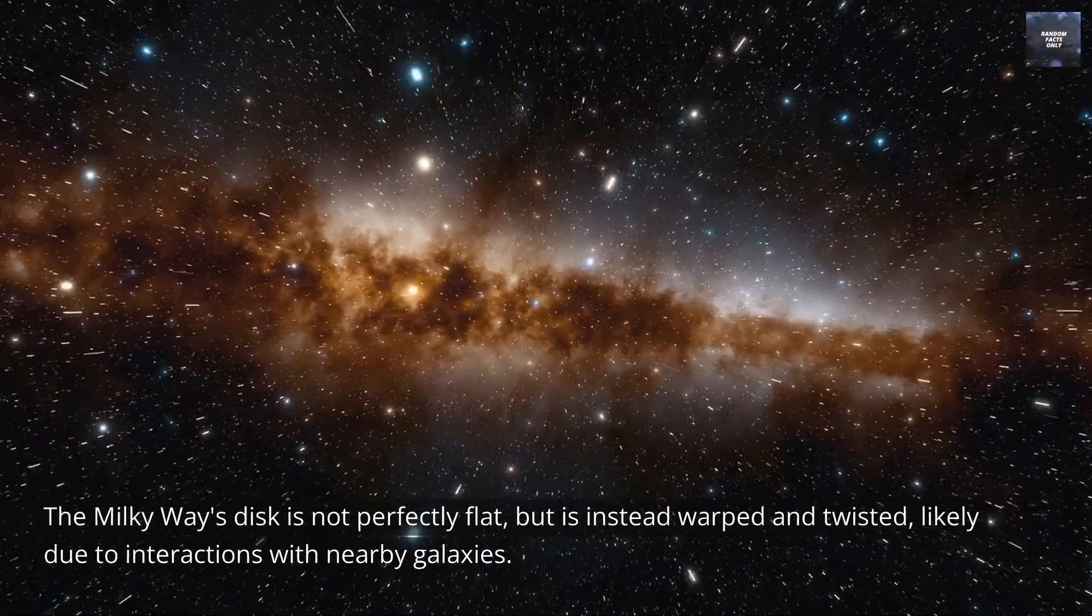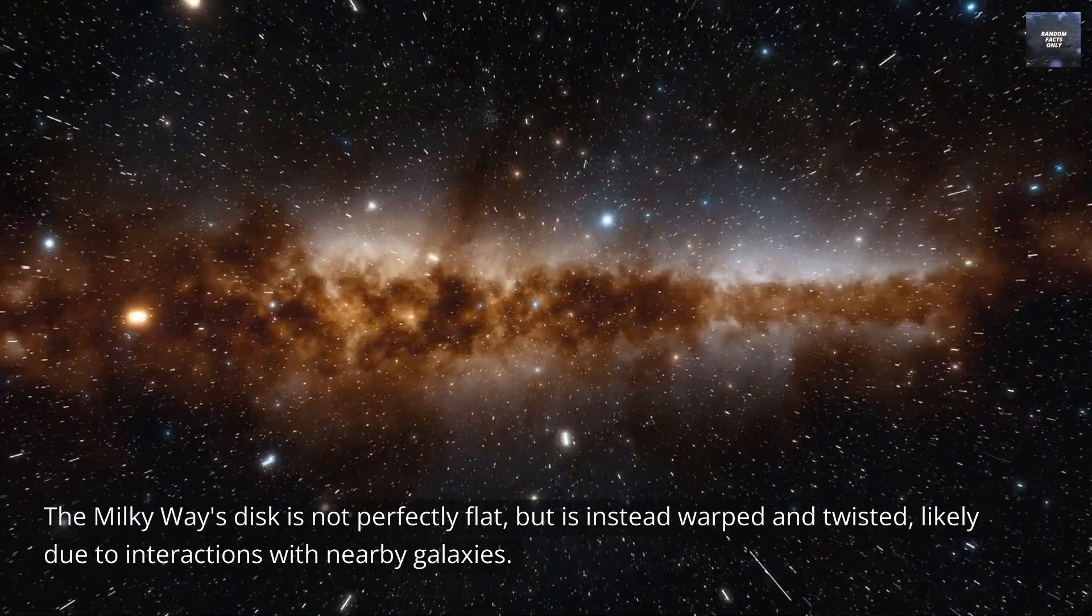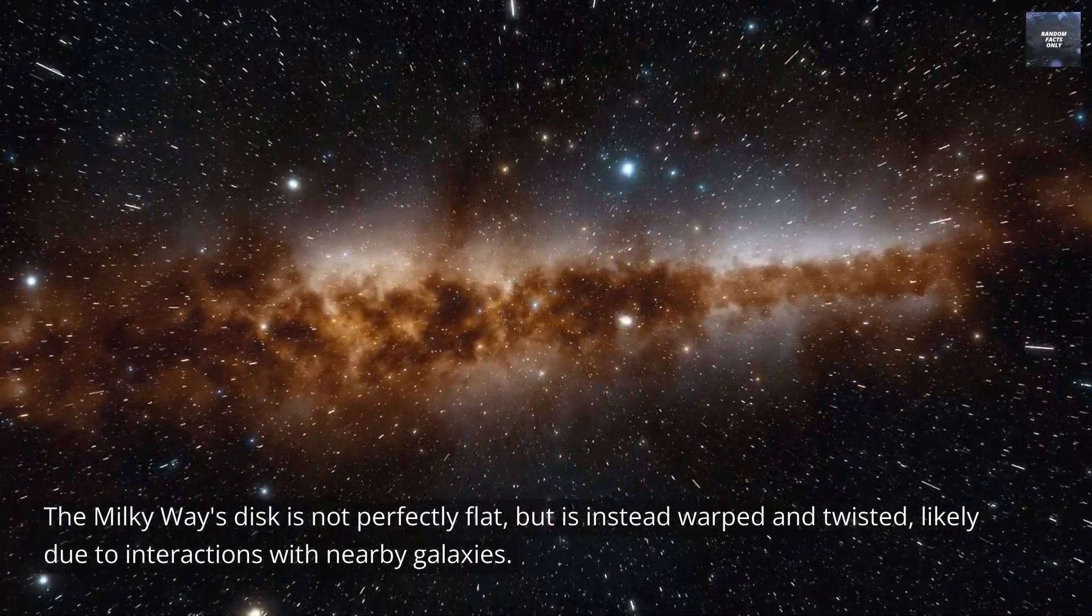The Milky Way's disk is not perfectly flat, but is instead warped and twisted, likely due to interactions with nearby galaxies.